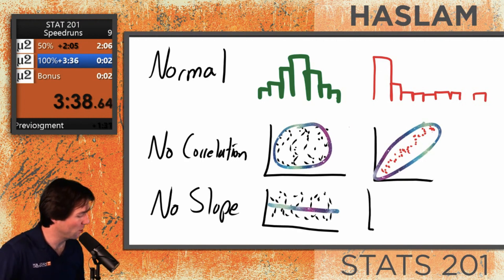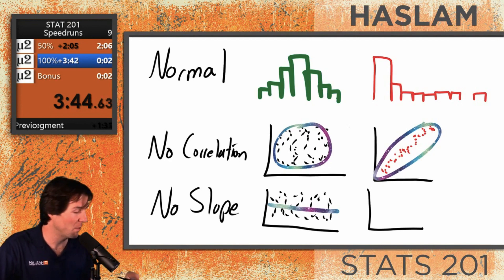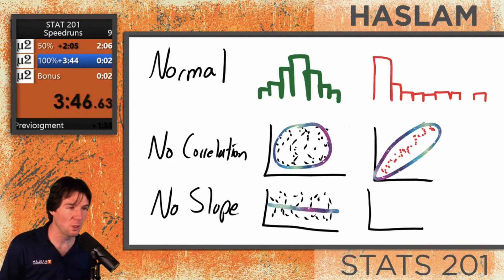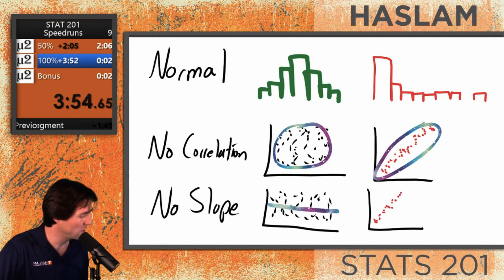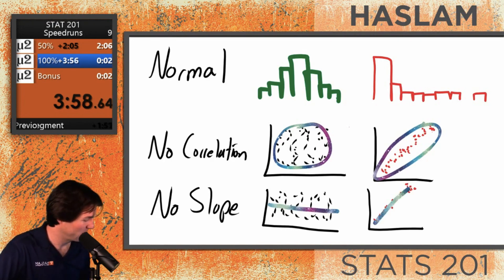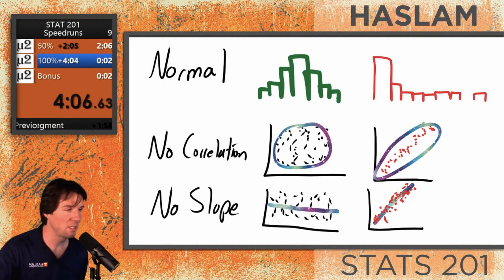If there's no slope to the line, what would you not expect to see? The first one was what we expected with no slope. But for the next one, if there's no slope, I wouldn't expect there to be a what? If there's no slope, I would not expect to see a slope. Exactly.